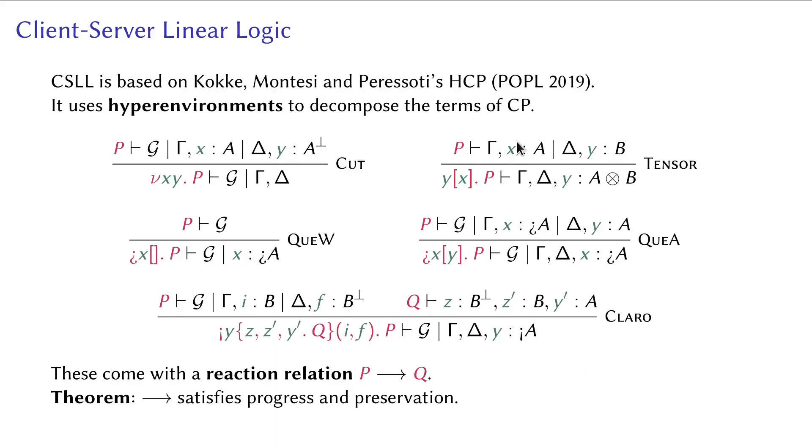Finally, here is our system Client-Server Linear Logic. It's based on this POPL 2019 paper and uses hyperenvironments to decompose CP terms of classical processes. Tensor and cut rules are copied from the POPL 2019 paper. The K-weakening, K-absorption, and Claro rules are essentially identical to the three rules in the previous slides, but with term assignment. Our system comes with a reaction relation that satisfies progress and preservation.